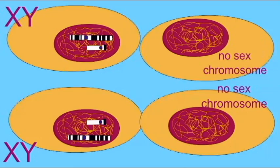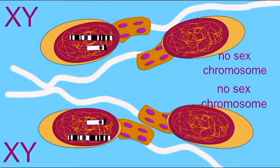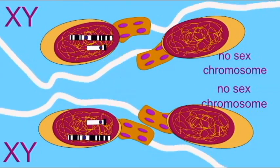Half will not possess sex chromosomes at all, while half would possess both an X and a Y.